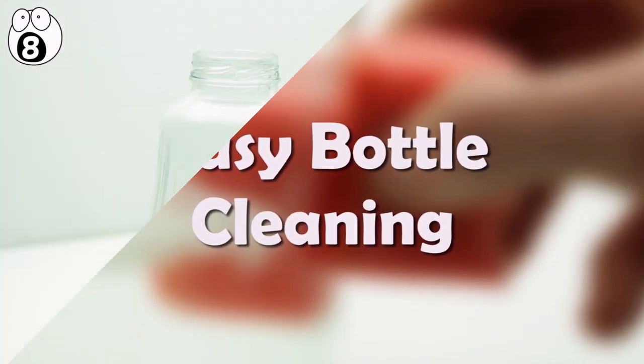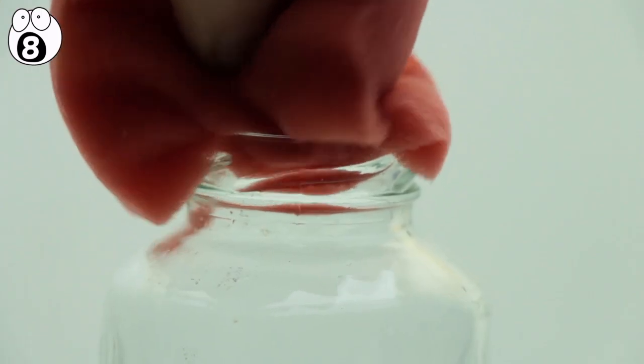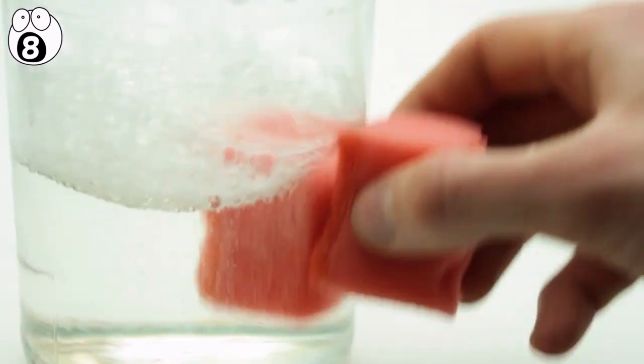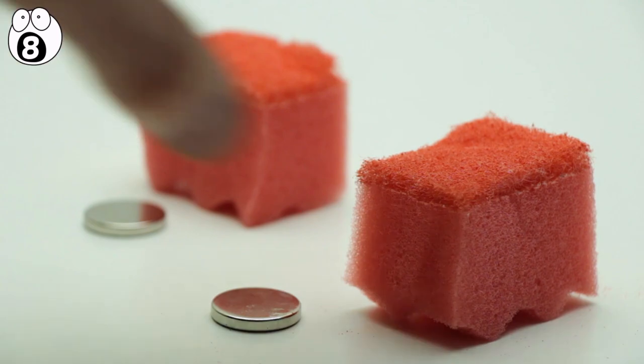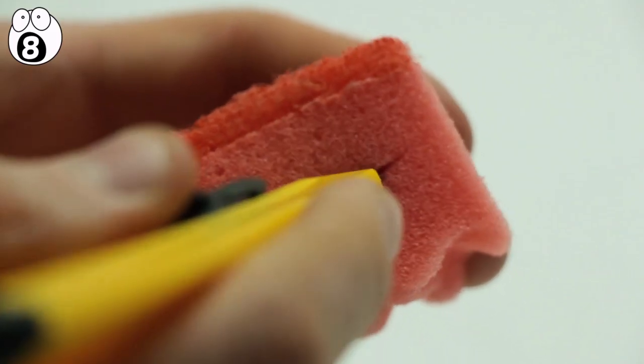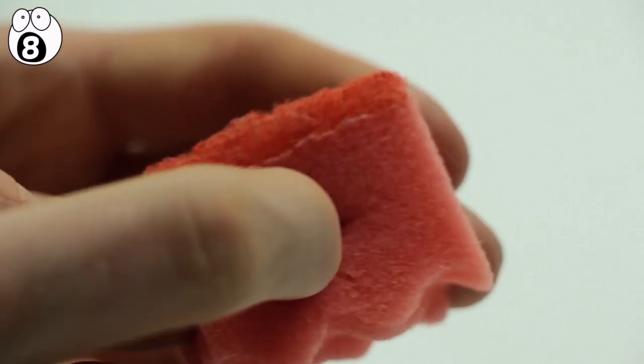Number 8: Easy Bottle Cleaning. One of the worst parts of doing any set of dishes has to be when it comes to cleaning inside those impossible bottles and carafes. There is a simple solution to this problem, however, and all you need is a pair of magnets and some sponges. First, you need to cut a small enough slit into the sponge you'll be using to clean. Make sure to get it deep enough to the center of the sponge and then slip in one of the magnets.